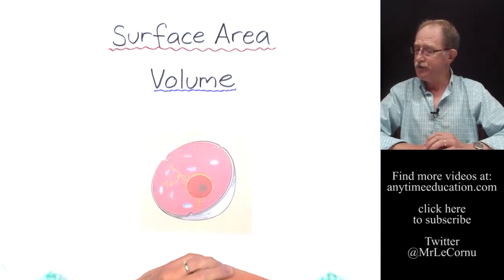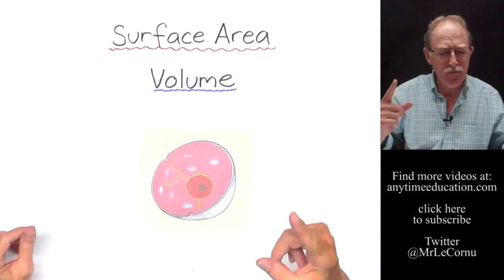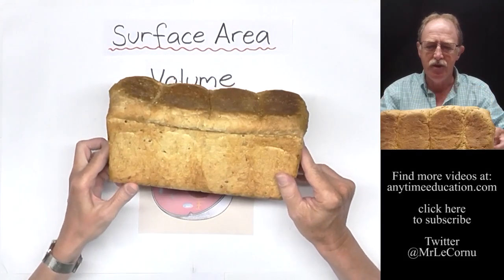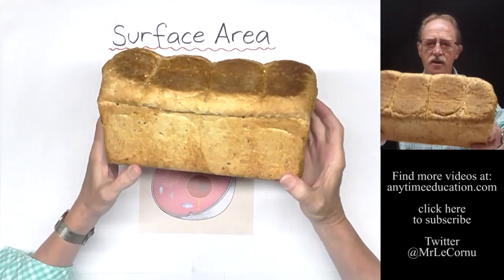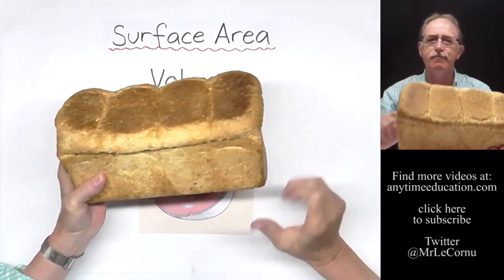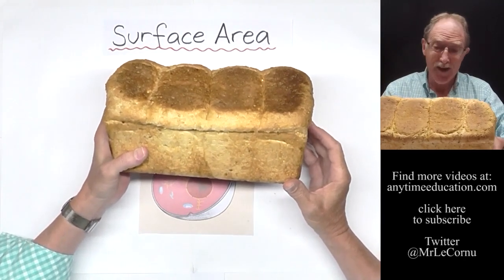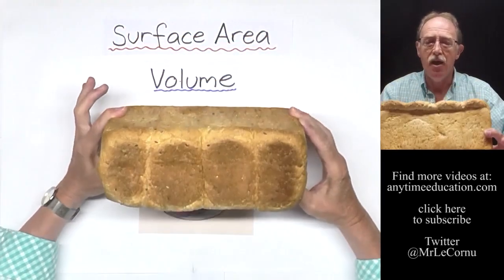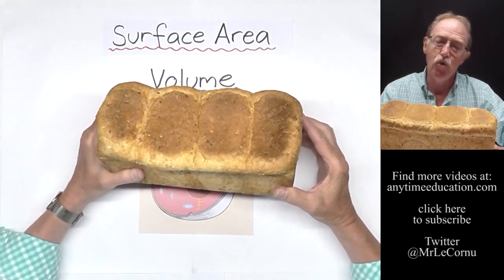To do that, we need to think about surface area and volume. We can illustrate surface area with a simple object like a loaf of bread. The surface area is really the crust — the loaf has six surfaces: two ends, two sides, a top and a bottom — and we measure surface area in square centimeters. The volume is how much space it takes up, measured in centimeters cubed.